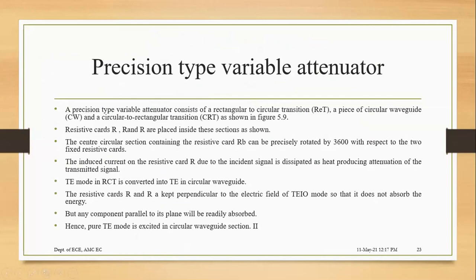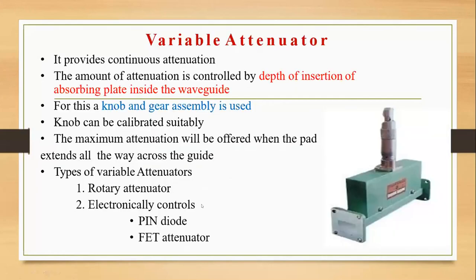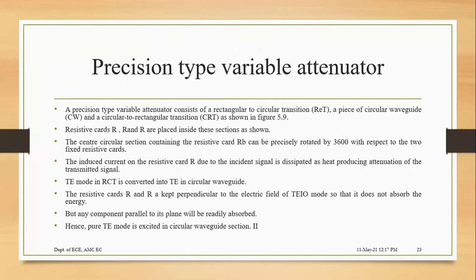Coming to precision — in variable attenuators you have two types: flap attenuator and variable attenuator. The next one is the precision type variable attenuator, which makes use of a circular waveguide section. Till now what you have seen is linear variation; in case of the precision type variable attenuator you will have a circular waveguide.